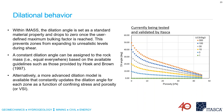Is there a preferred element size when using IMAS? It really depends on the application and the extent of the model. There is no preferred zone size per se. We would like zone sizes to be as close as possible to each other in size, but that's not possible in most mining applications.